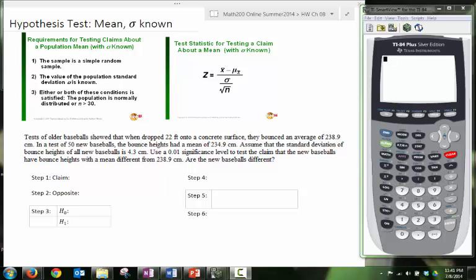Let's do a problem from section 8-4 where we're doing a hypothesis test for mean and sigma is known. You should always check the requirements before doing a hypothesis test to make sure that you have all the requirements satisfied. We want to assume that we have a sample that is simple and random. We want to make sure that sigma is in fact known for our problem. And we want one of these two conditions, or both, to be satisfied: that the population is normally distributed or we have a large enough sample of 30 or more.